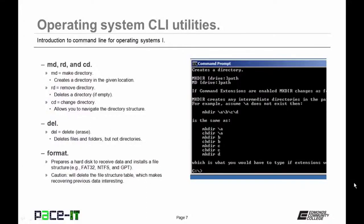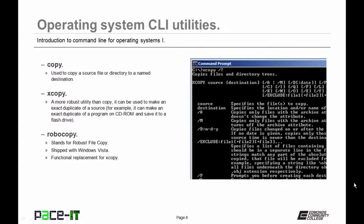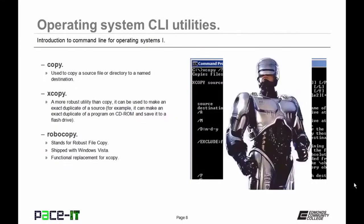Now let's move on to copy commands. Copy is used to copy a source file or directory to a named destination. Copy didn't have quite the utility Microsoft was looking for, so they came up with XCopy — a more robust utility that can make an exact duplicate of a source and duplicate a program onto CD-ROM or flash drive. Then Microsoft came up with Robocopy — robust file copy — which ships with Windows Vista and newer and is the functional replacement to XCopy, and is again more robust.